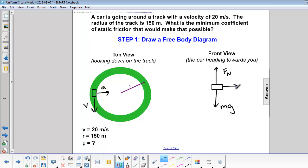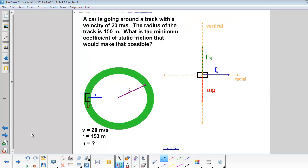The force of friction is towards the center of the circle, and so is acceleration. Now that we have our free body diagram, we can use it to find the coefficient of friction.